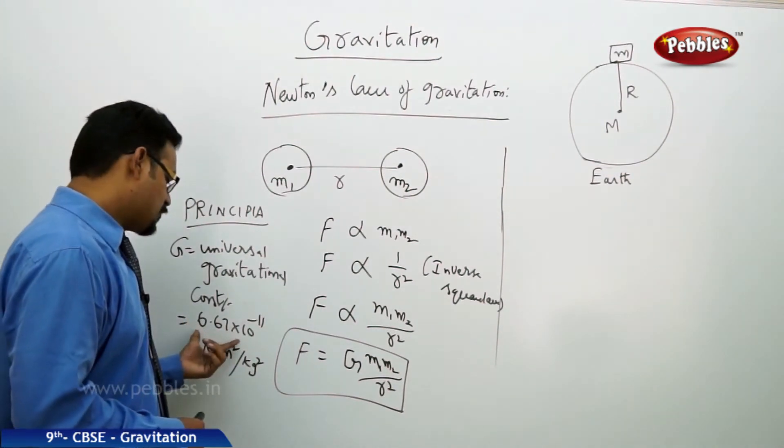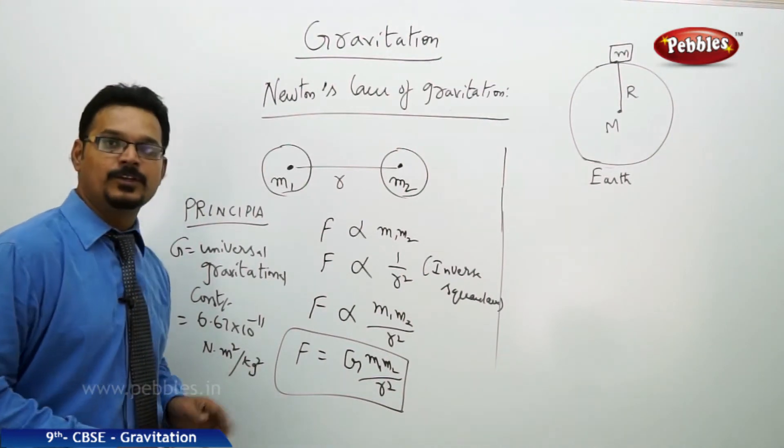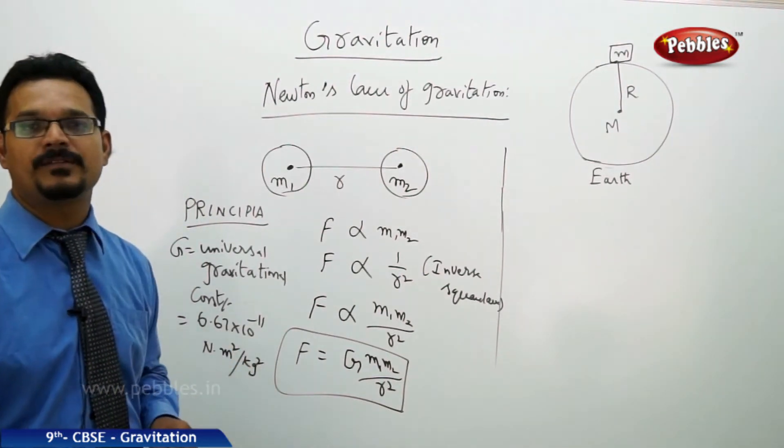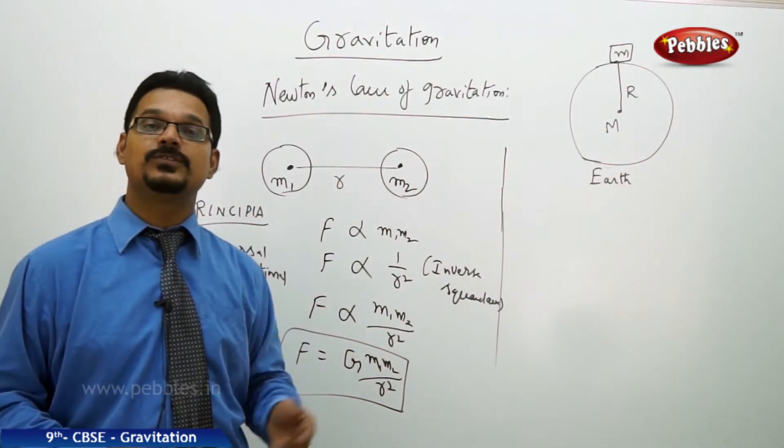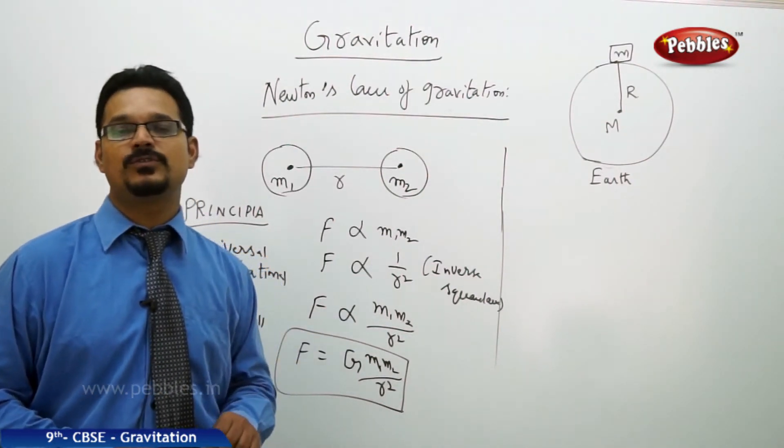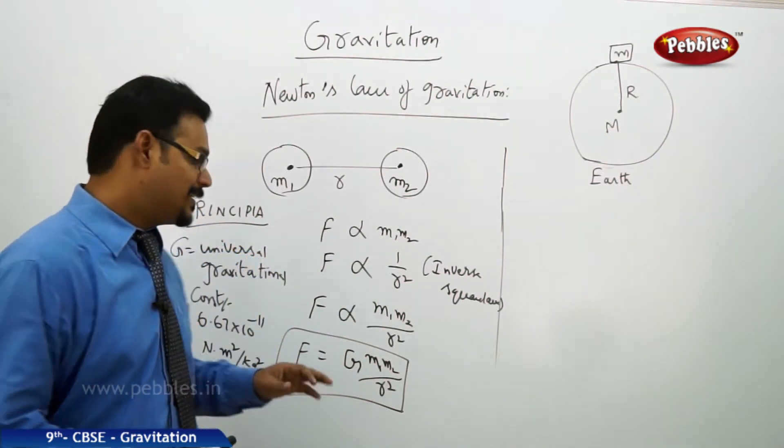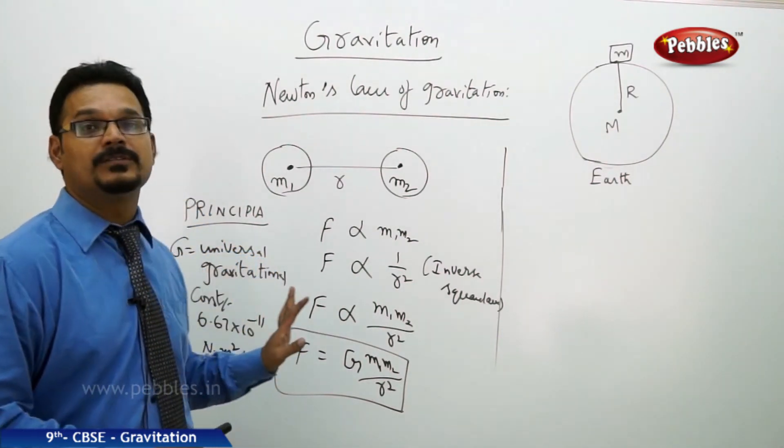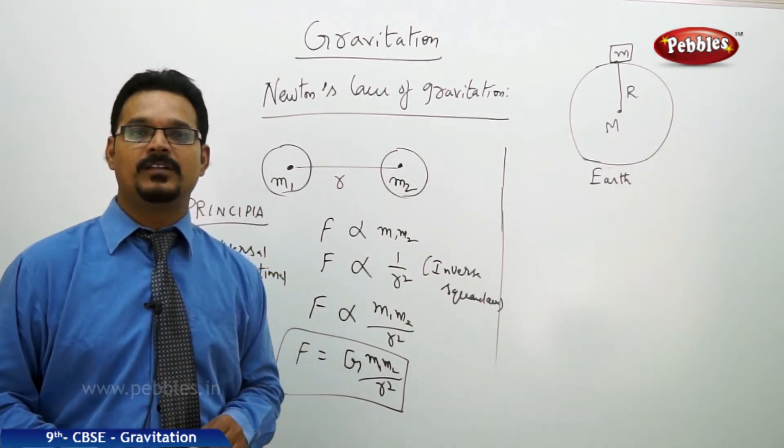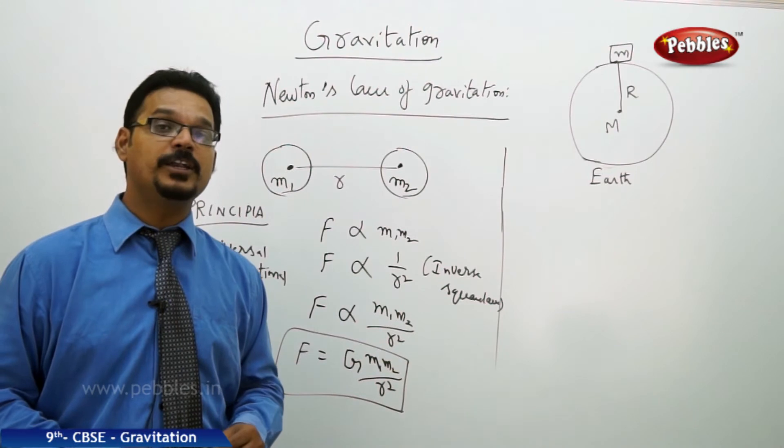Now the question is: how did Isaac Newton get this number 6.67 times 10 to the power of minus 11 Newton meter square per kg square? No one knows. In old history and historical books, it was mentioned that Isaac Newton wrote this number like that. There was no experiment, there was no mathematical proof.